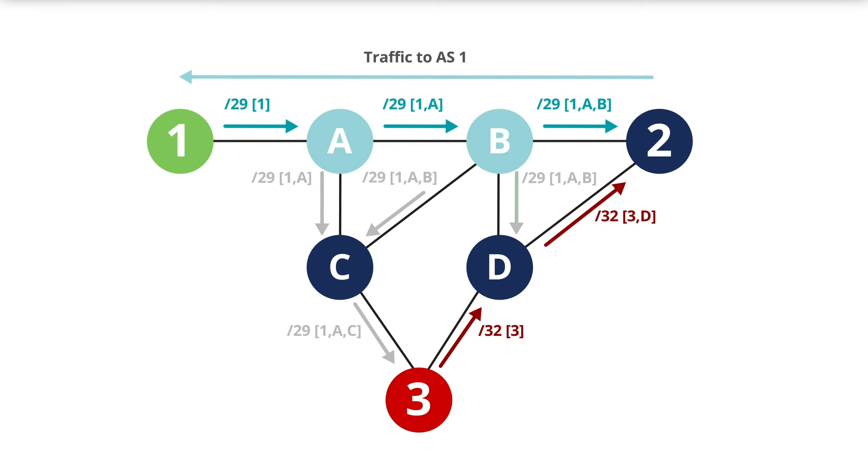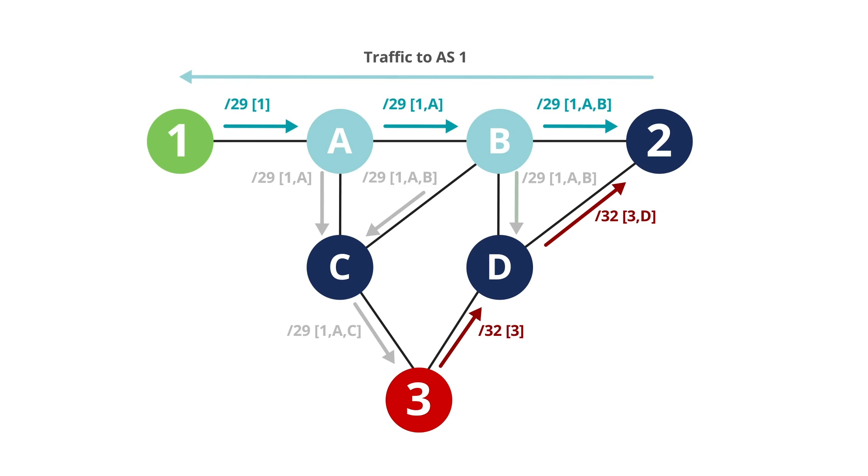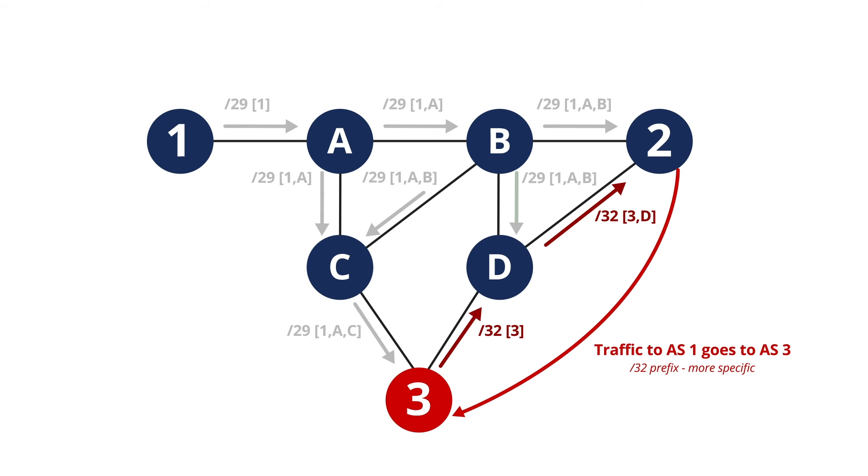A principle in routing is that more specific routes take precedence. Now in AS2, the attacker's slash 32 route will have priority over the legitimate slash 29.